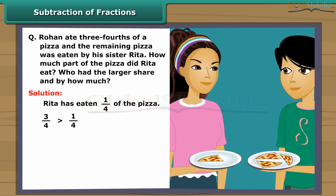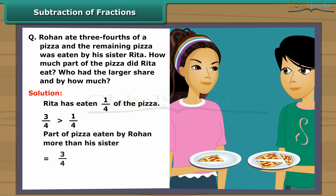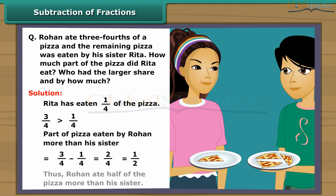Thus, Rohan has the larger share of pizza than Rita. On subtracting one-fourth from three-fourths, we get one-half. Thus, Rohan ate half of the pizza more than his sister.